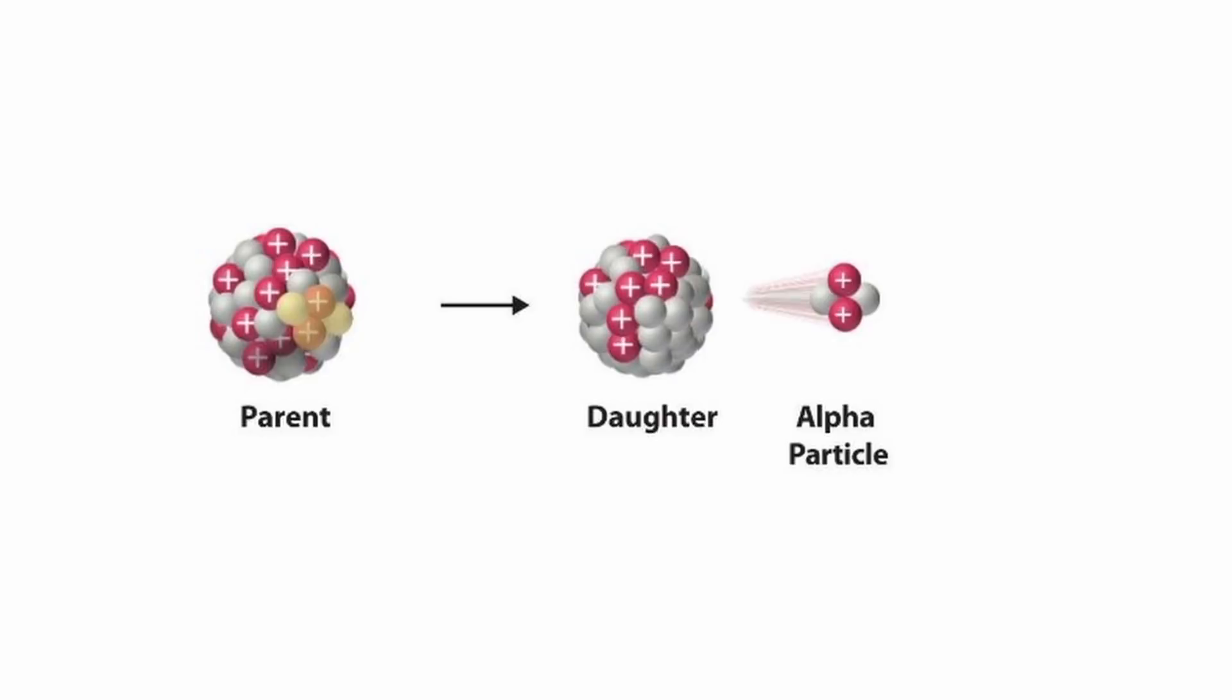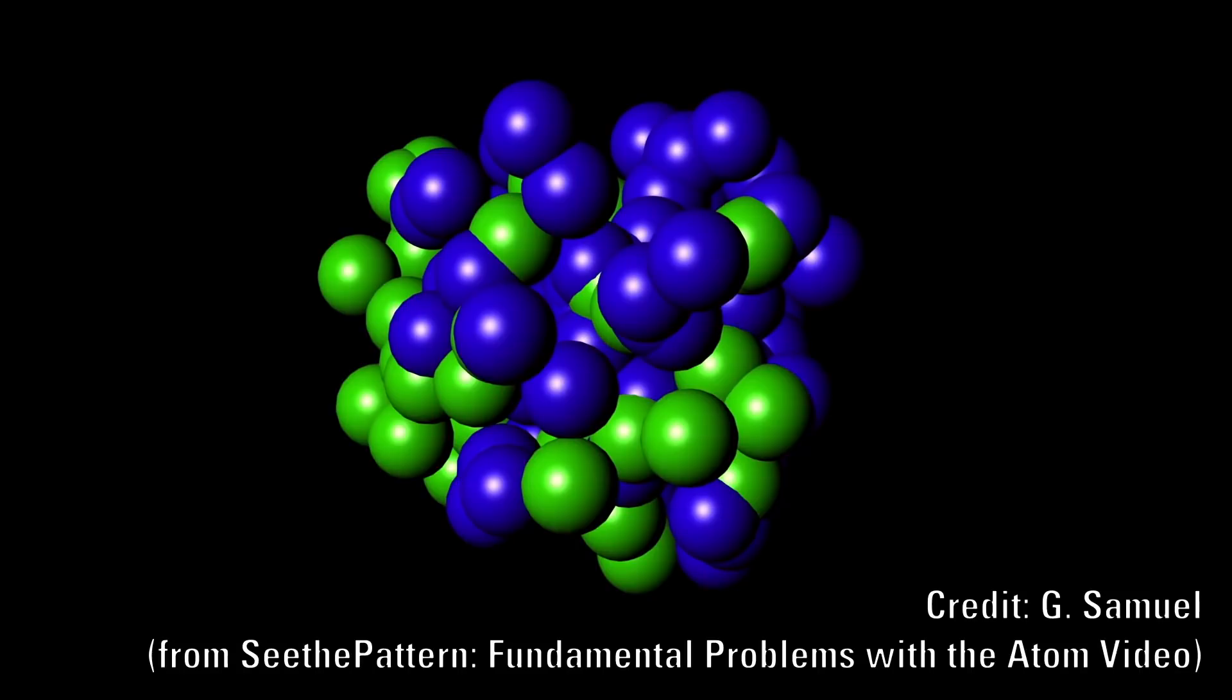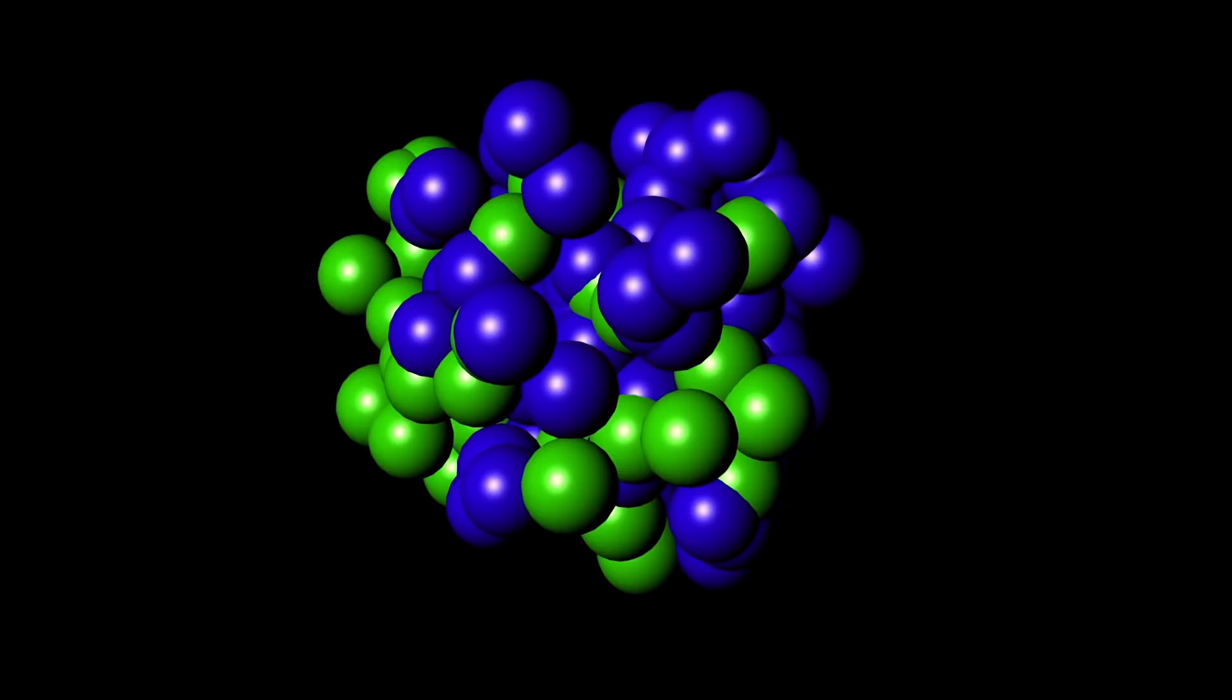If we examine the simple case of an alpha particle emission, this also throws up many problems. One of these relates to the size of the nucleus itself. We know that protons and neutrons have size. This means that the nucleus must have a size which relates to these sizes.